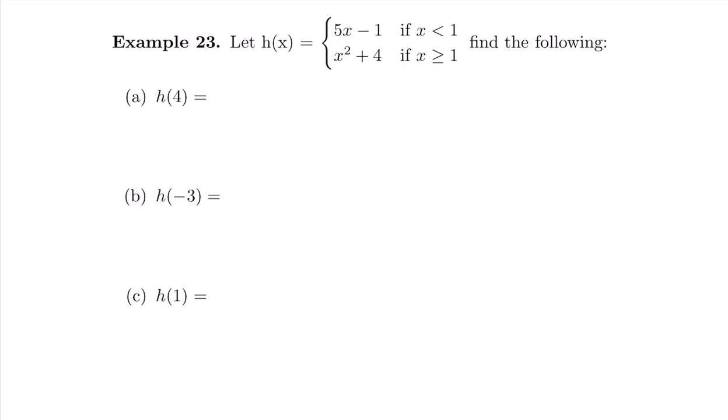We have h(x) here, and we're going to plug into 5x minus 1 as long as x is strictly less than 1. On the other hand, we're going to plug into x squared plus 4 as long as x equals 1 or is bigger than 1. We're going to figure out which piece we should be plugging into.